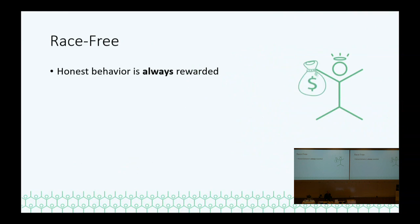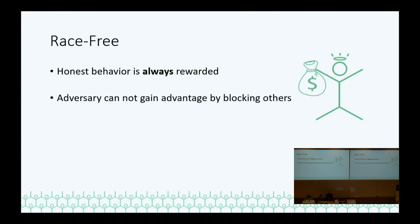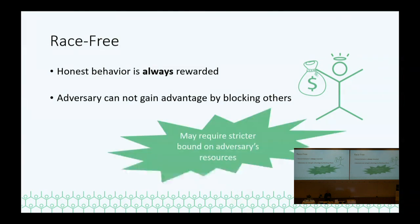We also talked about incentive compatibility. What we want this protocol to satisfy is that there are no races — honest behavior is always rewarded, no matter what the adversary does, within our assumptions. If the adversary has a dishonest majority we can't guarantee anything. The nice thing is once you show honest behavior is always rewarded, the flip side is you can't gain anything by doing bad things, because the sum of rewards is basically constant. If nobody can lose by behaving honestly, nobody can gain by behaving dishonestly. We actually prove that this race-freeness happens with a slightly stricter bound on the adversary's power than regular security.